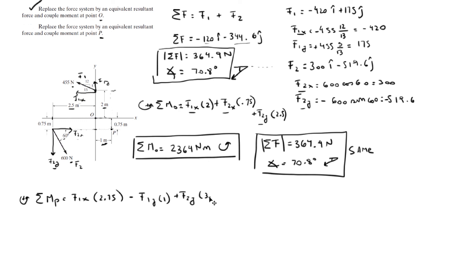Plus F2y times 3.5. 3.5 is a distance from here to here, and it's trying to turn it that way. Therefore, it's positive. So, when you add this all up, you're going to get that the moment is 2798.6 N·m. And since it's positive, it's counterclockwise.